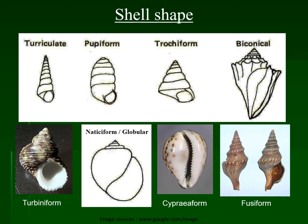Next, coming to shell shape, the shell shape of gastropods may be of different types. The third type shown in this picture is known as trocheiform shell. Next comes biconical — here you can see two inverted cones occurring opposite to one another, one on each side, and as two cones occur invertedly towards each other, this shell form is known as biconical.